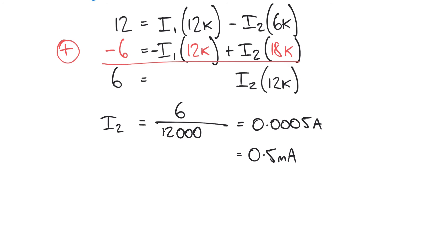So now we know the value of I2. And what we can do is substitute this value of 0.0005. We can substitute that into either of our original equations. And we'll skip the working, but that rearranges to find I1 being equal to 1.25 milliamps.